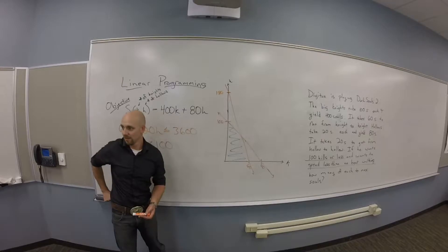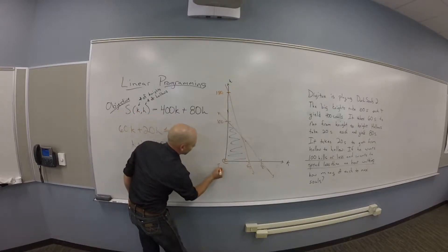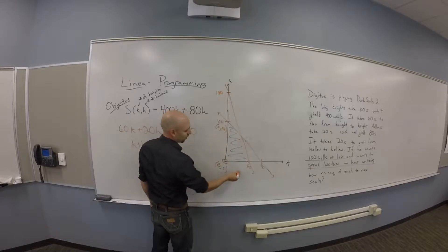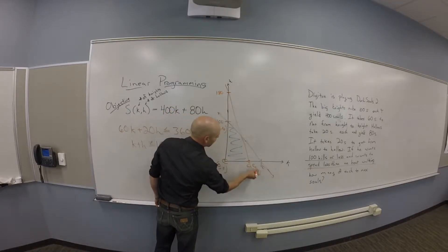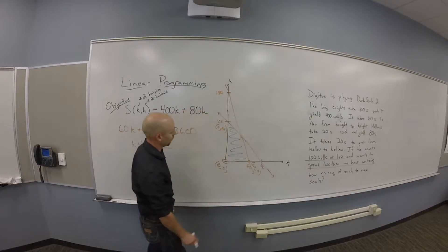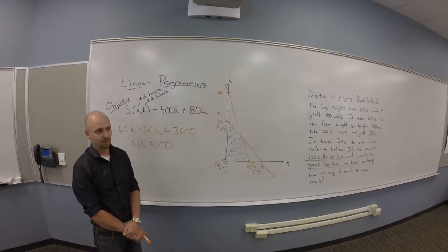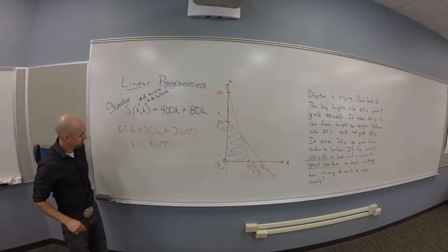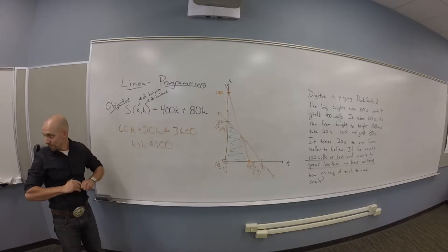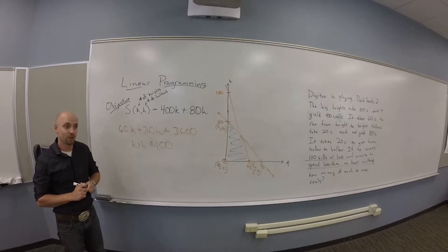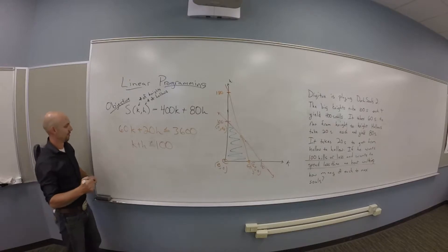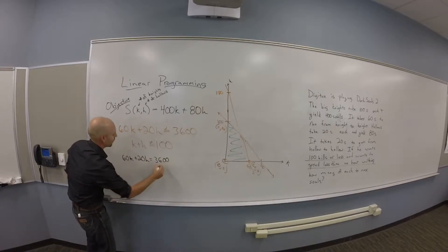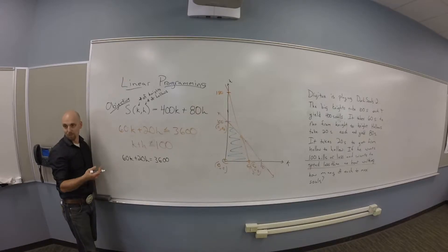What are my vertices on this thing? Zero, zero is going to be a point of importance. Zero over 100 up is a point of importance. This guy is 60 over, zero up, and this dude is, uh-oh. Where's that one? How do I find that? I'm looking for where these lines intersect. Here's my first equation with a hard equal sign.